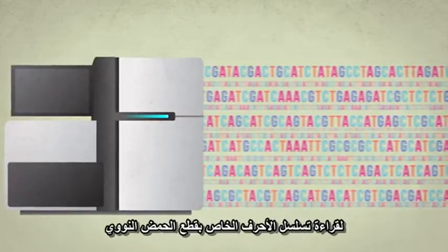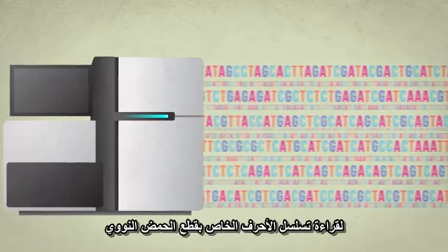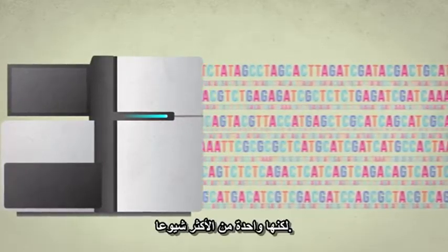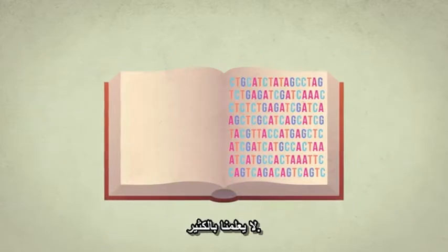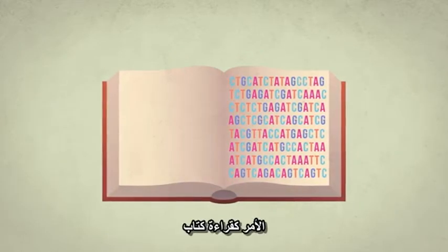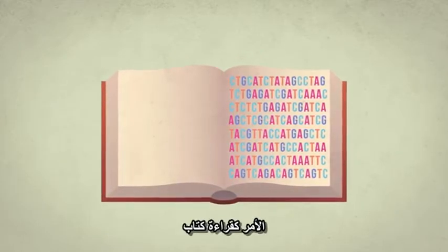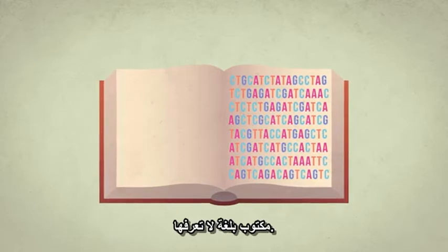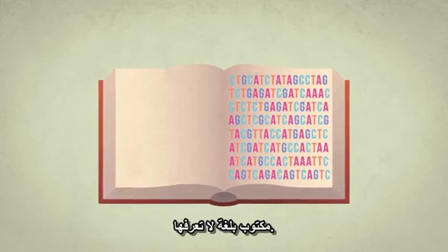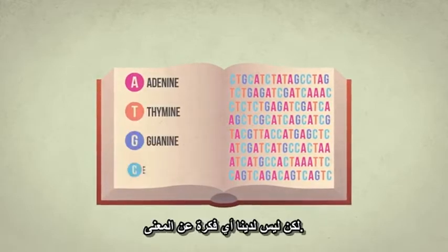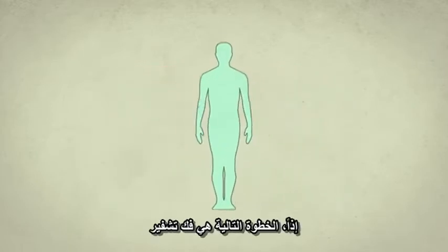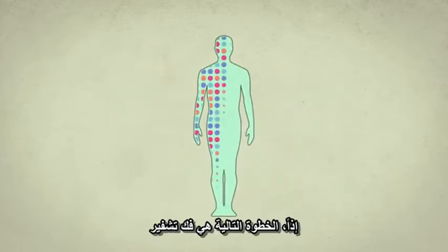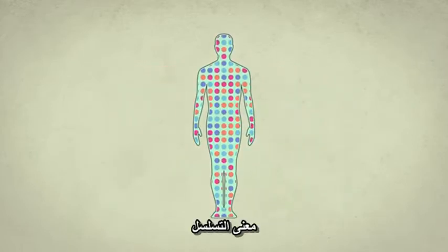This isn't the only way to read the letter sequences of pieces of DNA, but it's one of the most common. Of course, just reading the letters in the genome doesn't tell us much. It's kind of like looking through a book written in a language you don't speak. You can recognize all the letters, but still have no idea what's going on. So the next step is to decipher what the sequence means.